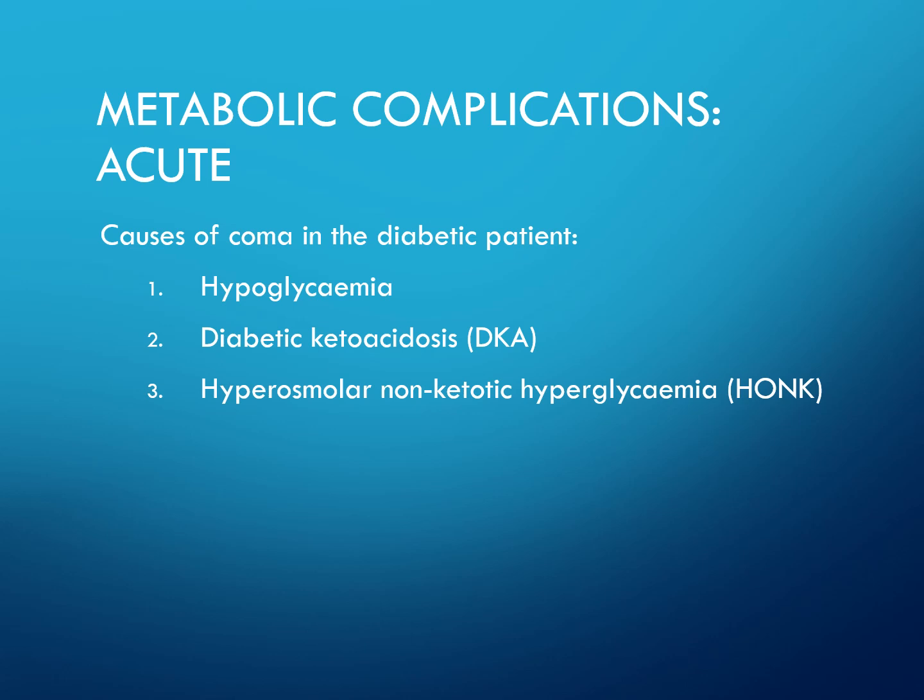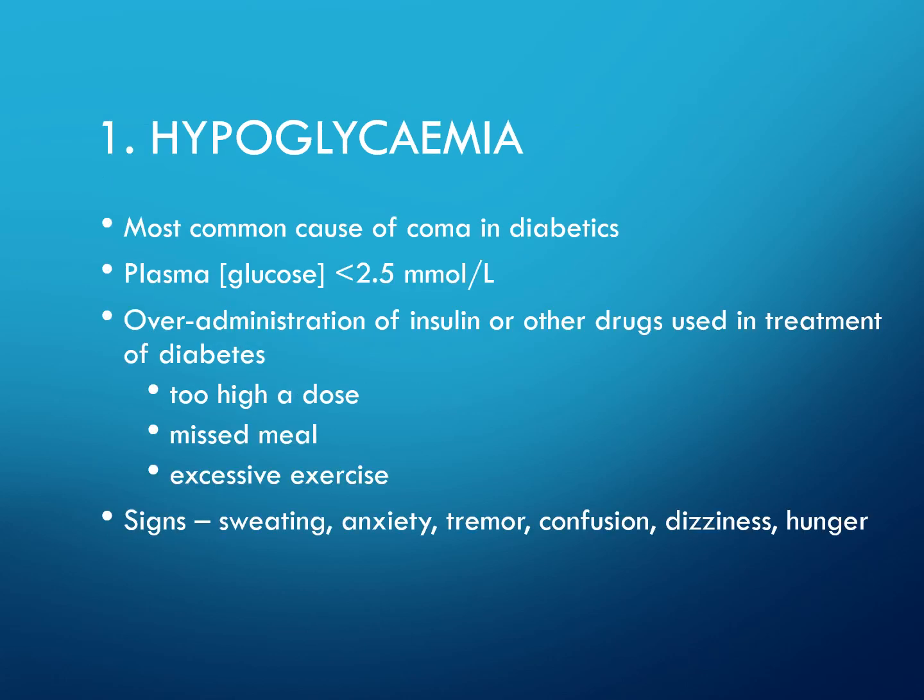Hypoglycaemia is the most common cause of coma in diabetics. The plasma glucose is less than 2.5 millimolar. It results from over-administration of insulin or other drugs used in diabetes — too high a dose, missing a meal, or excess exercise. Signs and symptoms include sweating, anxiety, tremor, confusion, and dizziness.